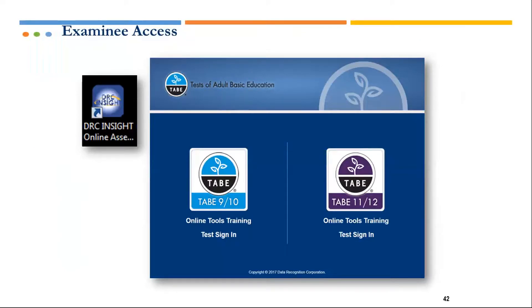When a customer takes the TABE Online, the first screen they'll see shows both TABE 9 and 10 and TABE 11 and 12 options. It's critical to ensure they choose the TABE 11 and 12 option. The 9 and 10 will remain on this screen until the end of June 2019 because other states are still using it, but your clients are required to take TABE 11 and 12 beginning January 1st.